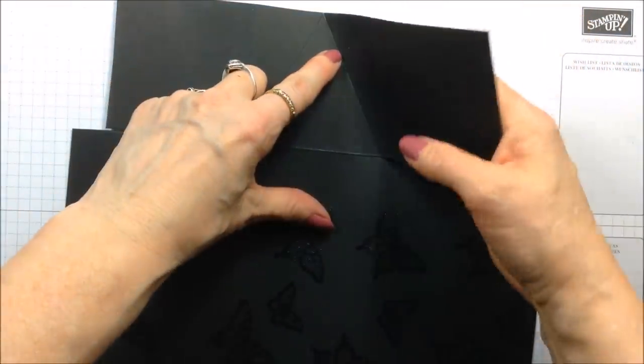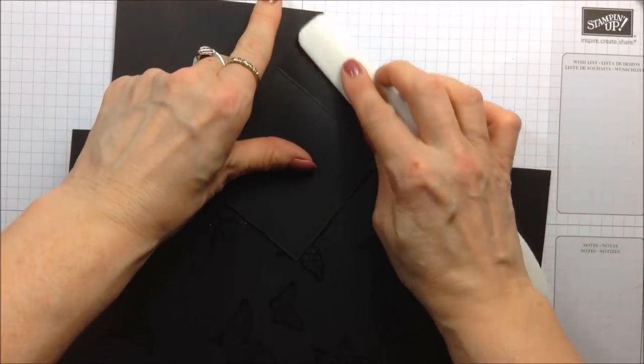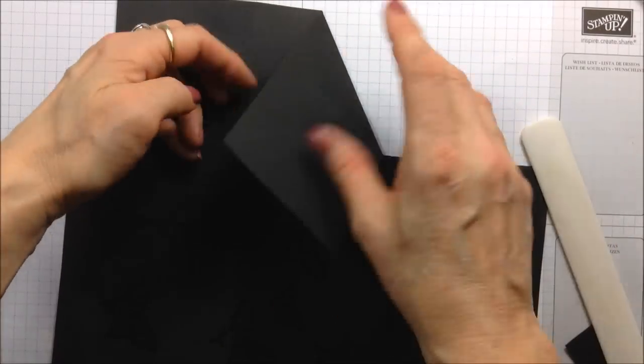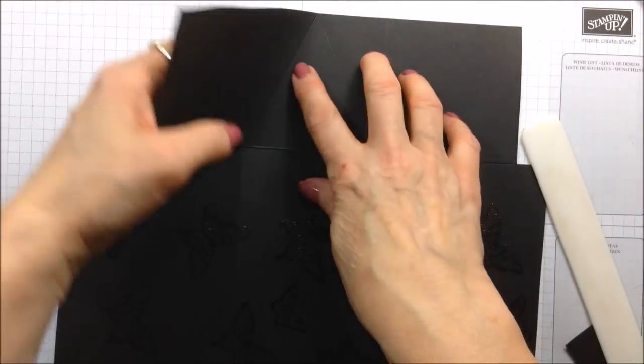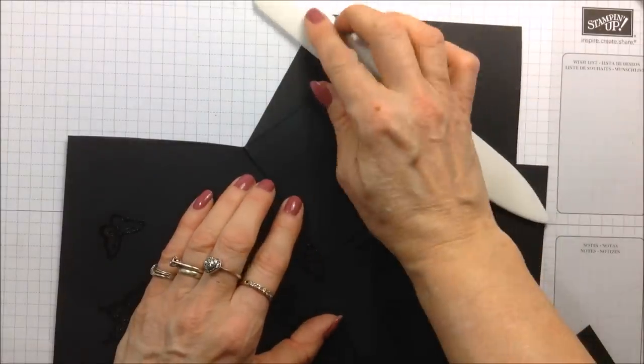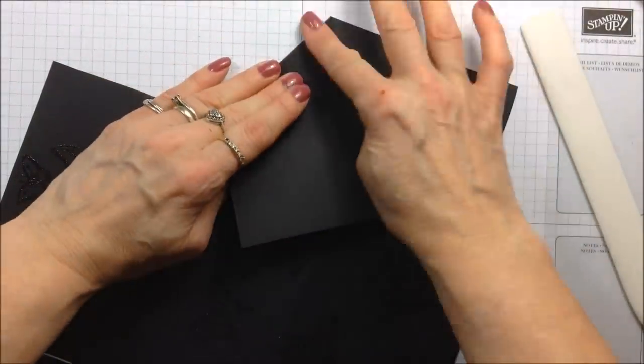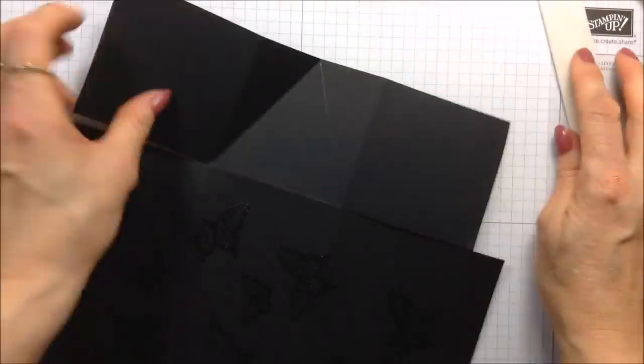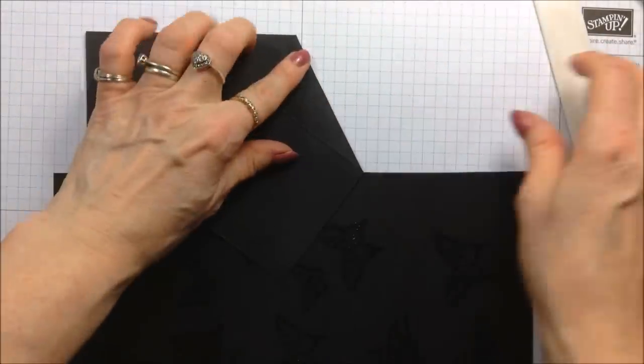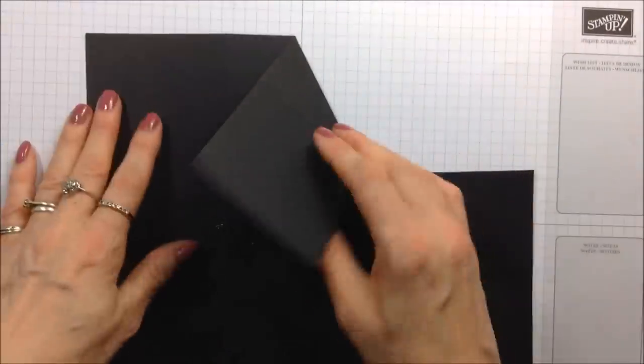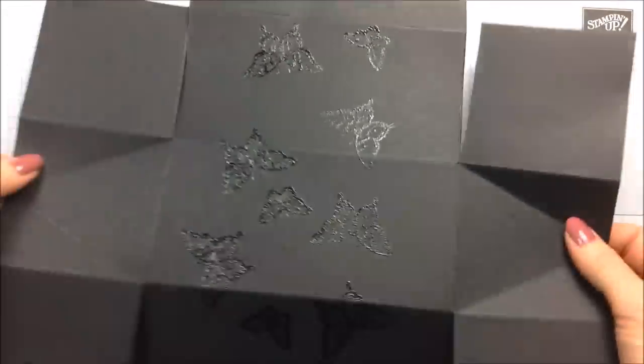Okay, so that's that done. Now you're able to just burnish these score lines here. Just fold your paper in on itself like that and do the same on the other side.